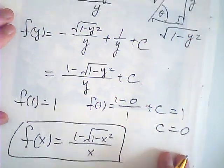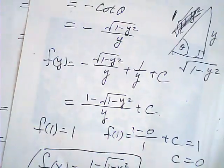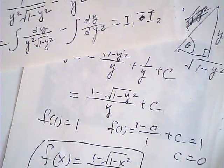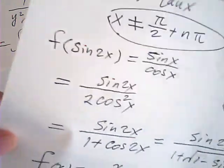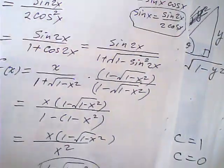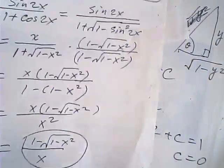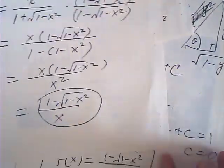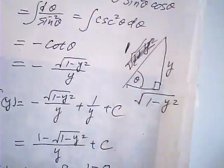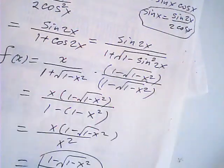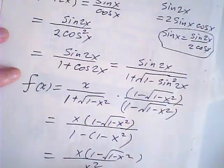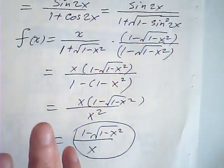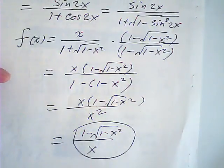So that is the second method to find the solution. Comparing the two methods: method one looks easier in this case, but sometimes method two is better — it depends on the function. I hope you like this. Thank you.